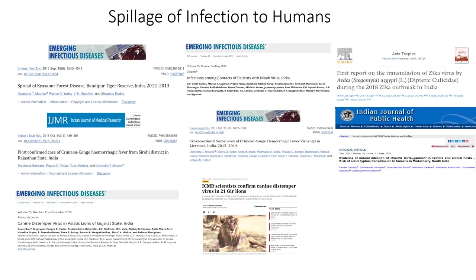There was an outbreak of canine distemper virus in Asiatic lions in Gujarat, where the virus was responsible for the death of several Asiatic lions. The etiology was initially confused with measles, but later ICMR's National Institute of Virology identified it as canine distemper virus. Dogs are most commonly infected with this virus, and the lions may have gotten infected by eating dogs or through close contact — which again remained a question mark.